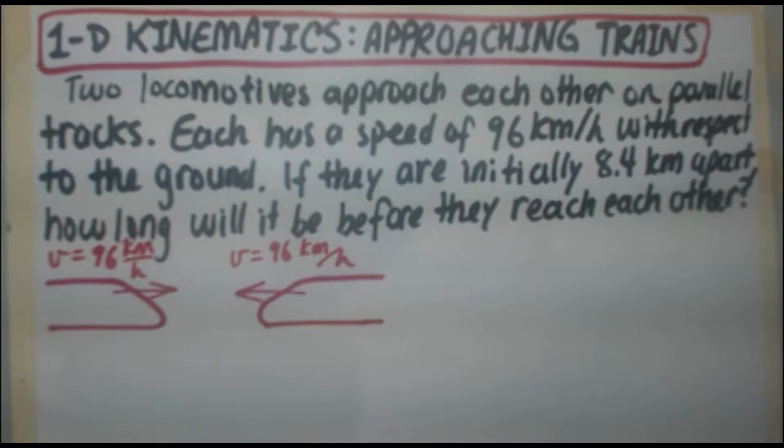Two locomotives approach each other on parallel tracks. Each has a speed of 96 kilometers an hour with respect to the ground. If they are initially 8.4 kilometers apart, how long will it be before they reach each other?